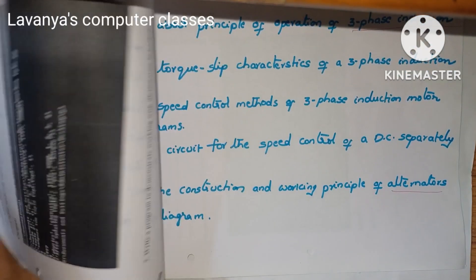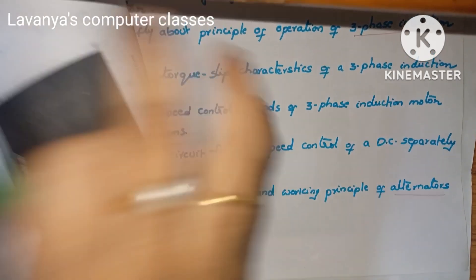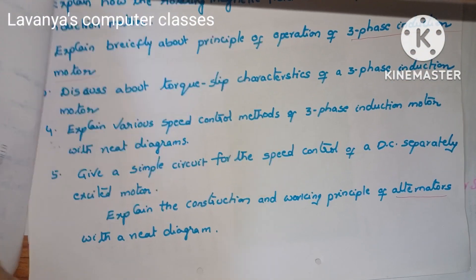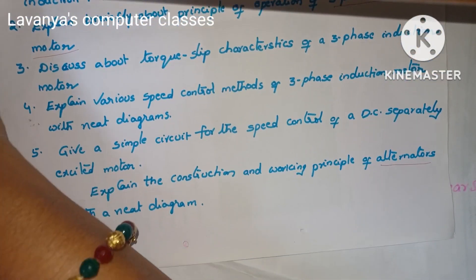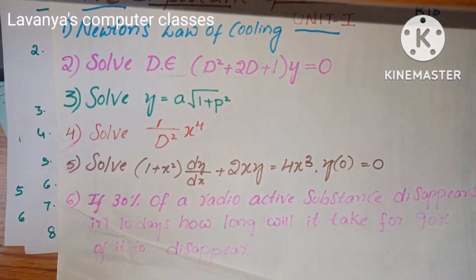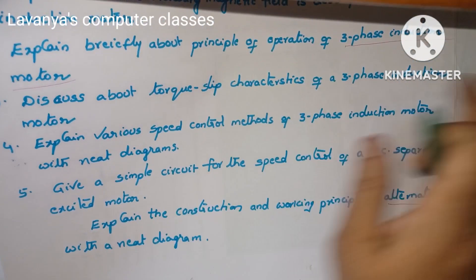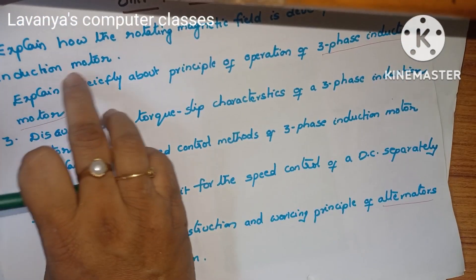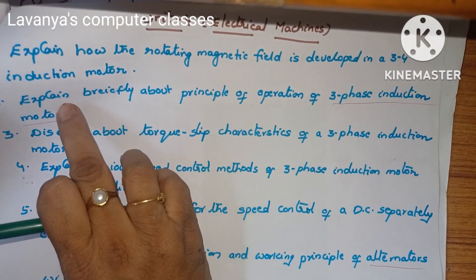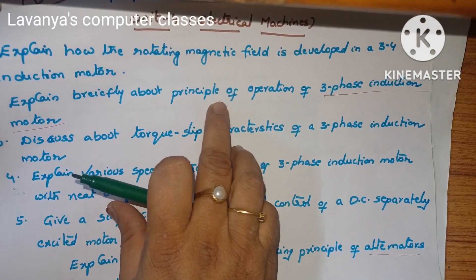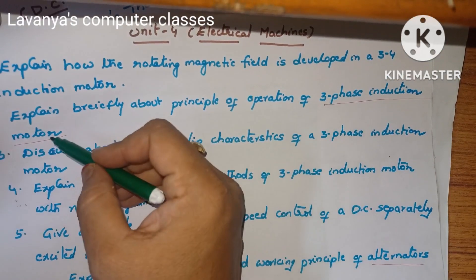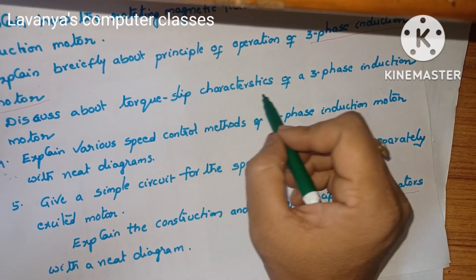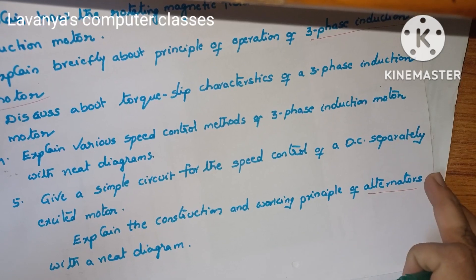Next is unit 4. The unit name is electrical machines. The questions are: explain how the rotating magnetic field is developed in a three phase induction motor, then explain briefly about the principle of operation of a three phase induction motor, and then discuss about torque-slip characteristics of a three phase induction motor.